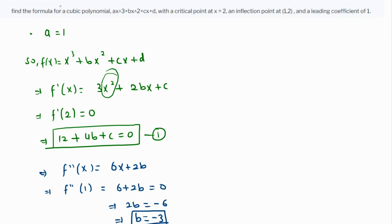Substituting b=-3 into equation 1: 12 + 4(-3) + c = 0, which gives 12 - 12 + c = 0, so c = 0.